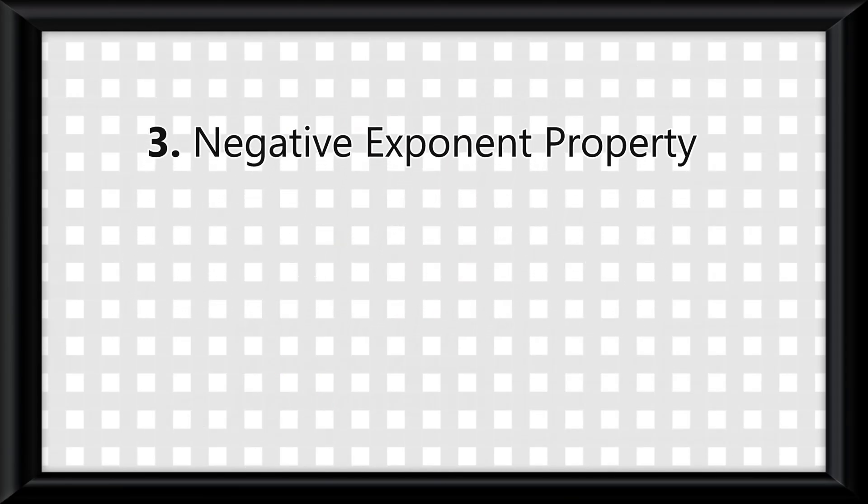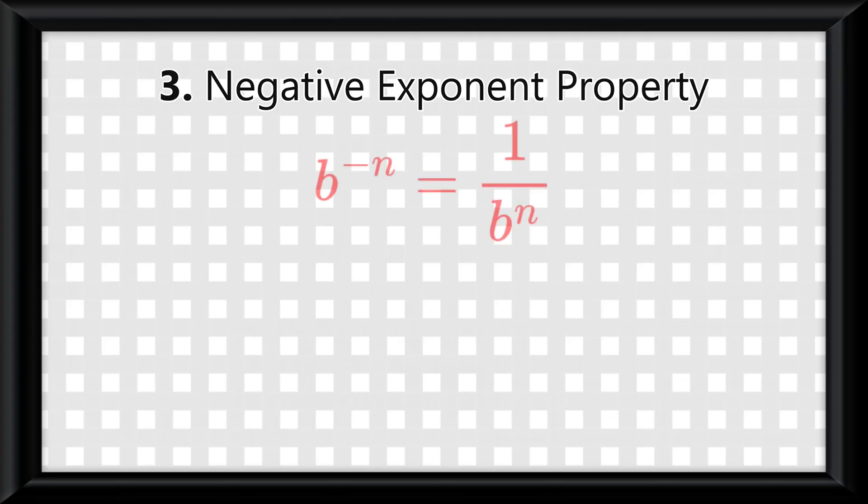The first one is the negative exponent property, which states that b to the negative n power equals 1 over b to the n. This means that if you ever have a negative exponent, it is simply equal to 1 over the original term removing the negative sign on the exponent.